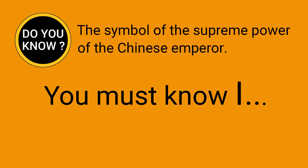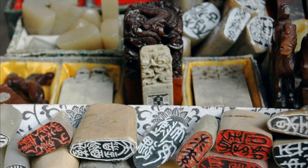Do you know the symbol of the supreme power of the Chinese emperor? The imperial seal, also known as the Heirloom Seal of the Realm or Imperial Seal of China, is a seal used by the emperor to sign as a symbol of supreme power.